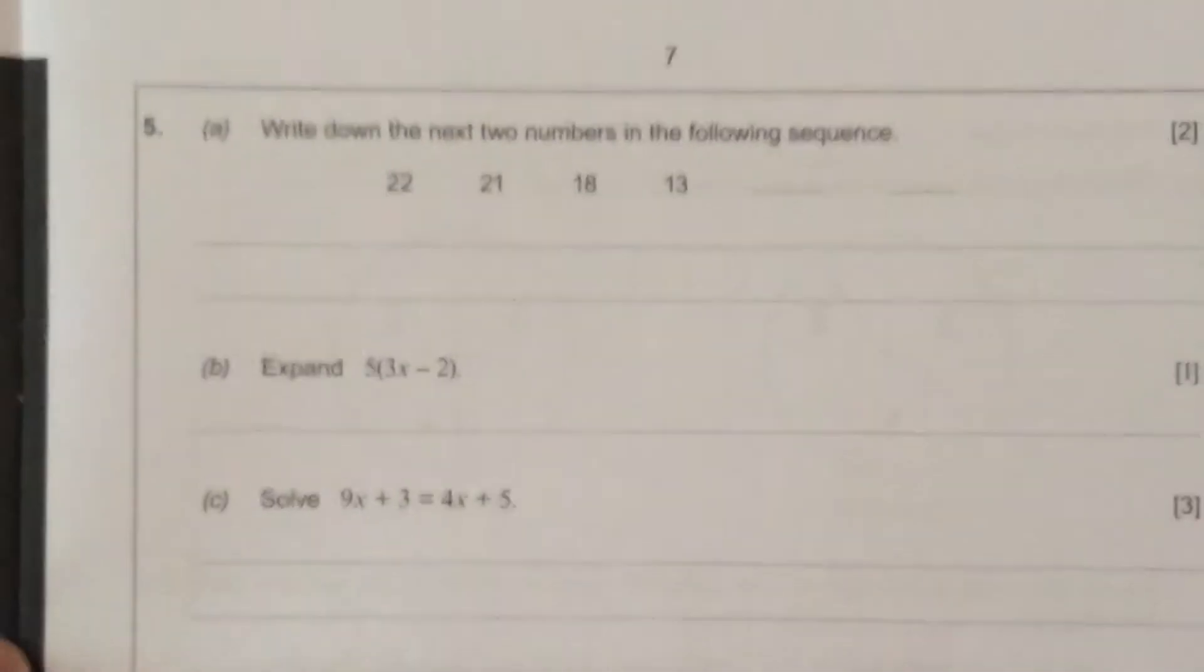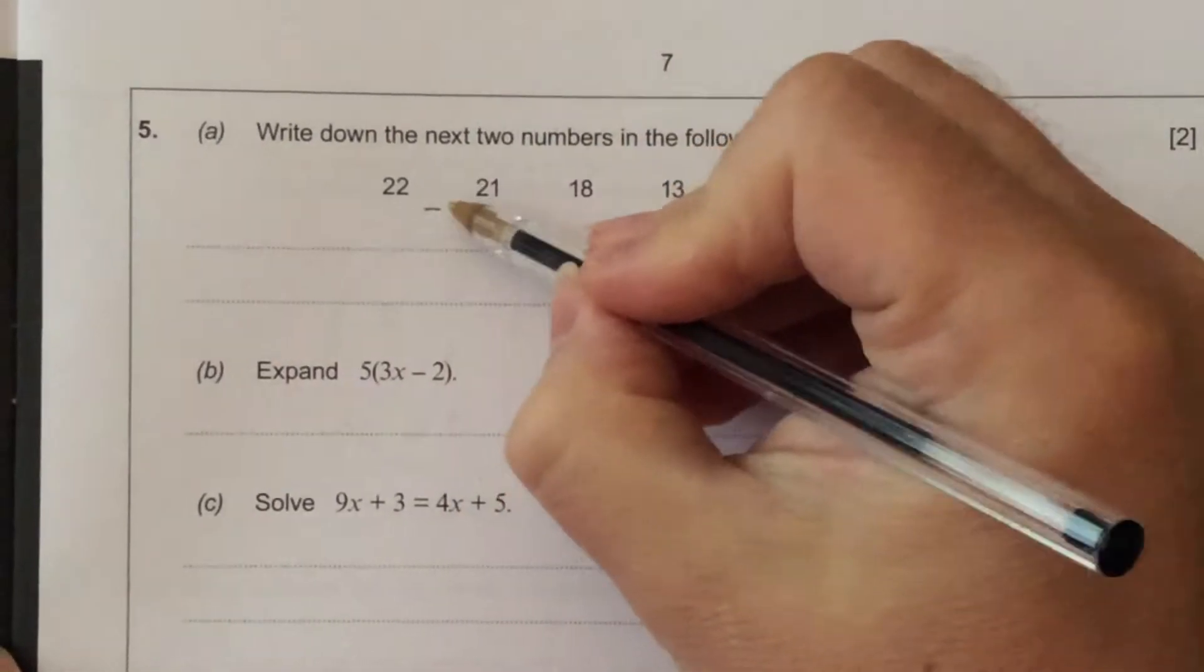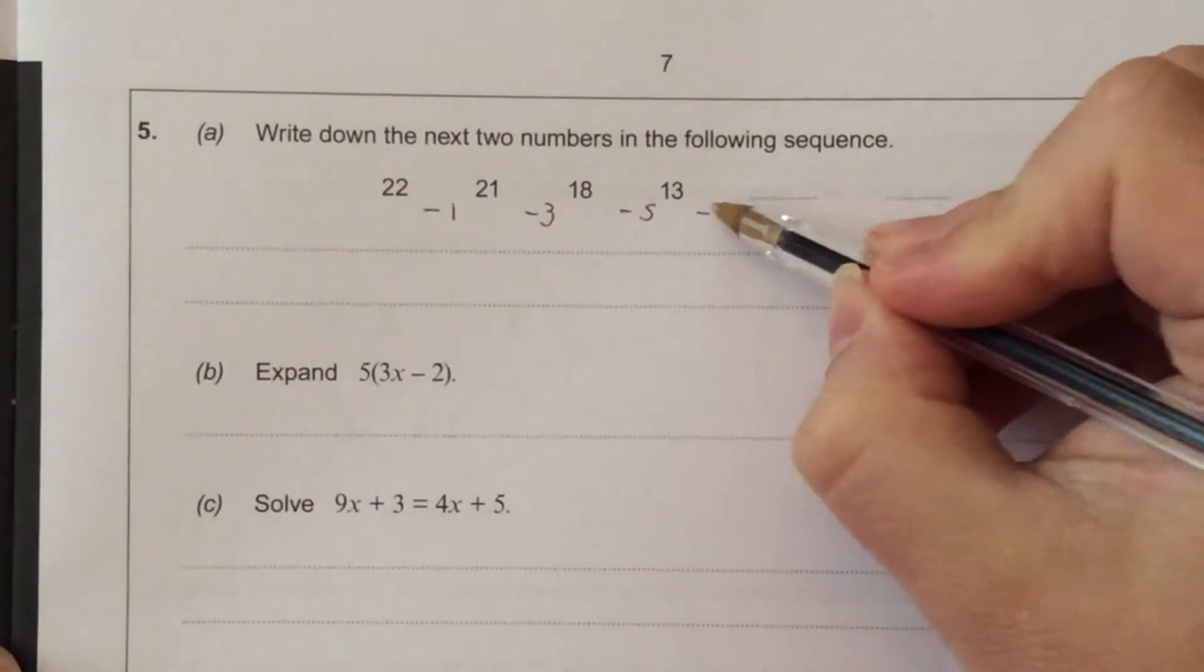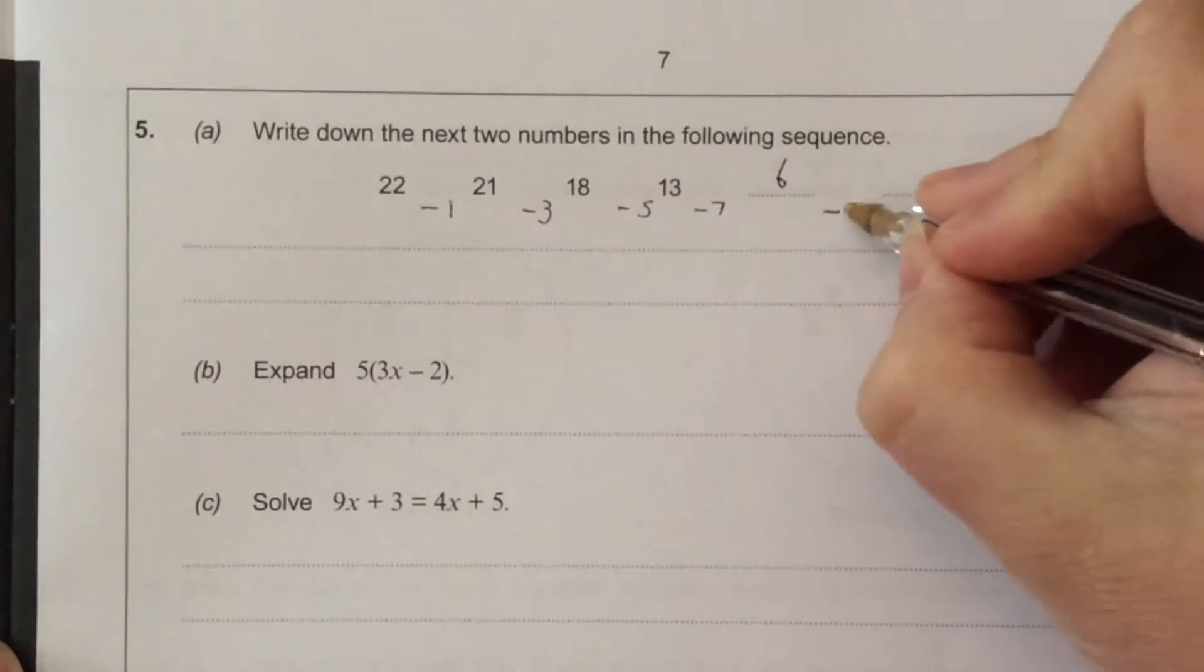Question 5, write down the next two terms in the following sequence. Take away 1, take away 3, take away 5, so take away 7. 13 take away 7 is 6.